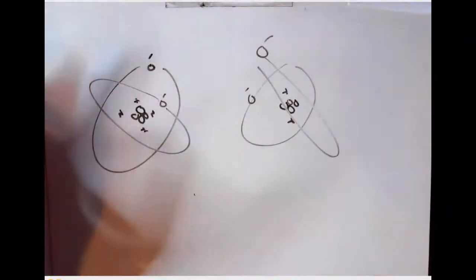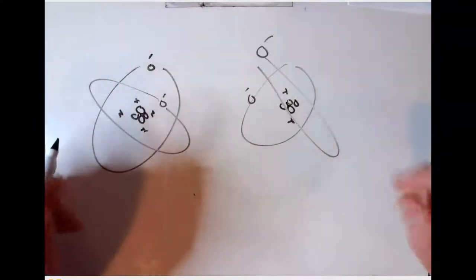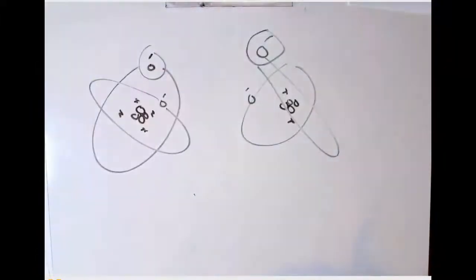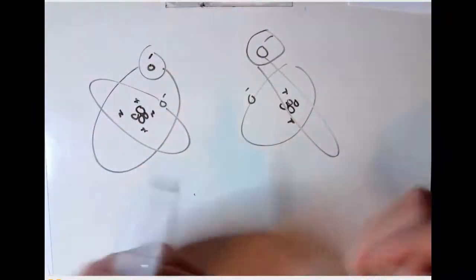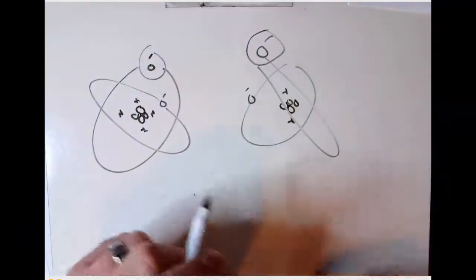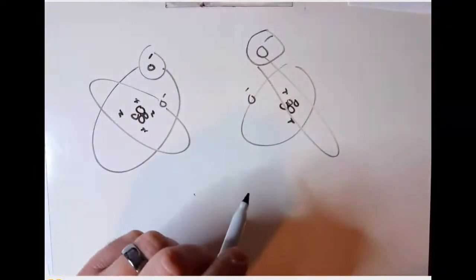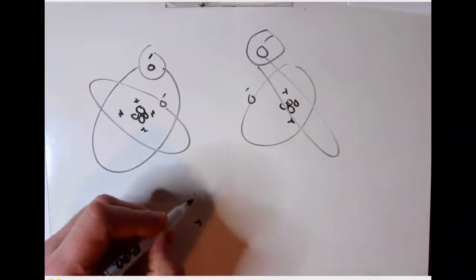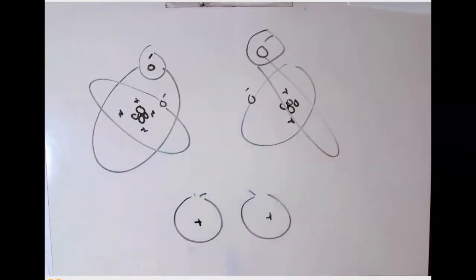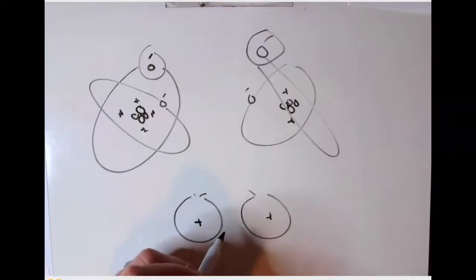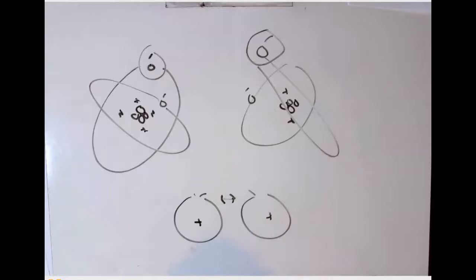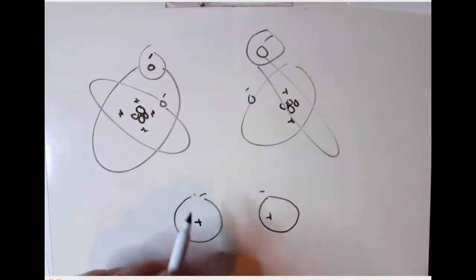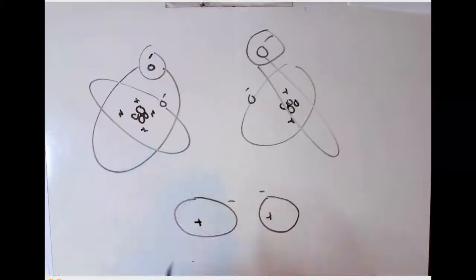Very far apart, these two atoms won't interact at all. But as we bring them closer together, the negative charges of the electrons will exert a repulsive force on one another — like charges repel. So these two negatively charged electron clouds will repel one another. Drawing this more simply: a positive charge in the nucleus and a negatively charged cloud around each atom. As we bring them closer, that repulsive force pushes against the electron clouds, and one electron cloud is going to be displaced relative to the other.